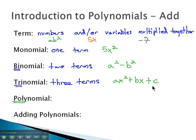A polynomial, poly means many, is made up of many terms. And actually, polynomial is kind of the blanket term that covers all of these. Binomials, trinomials, monomials, and monomials are all polynomials.